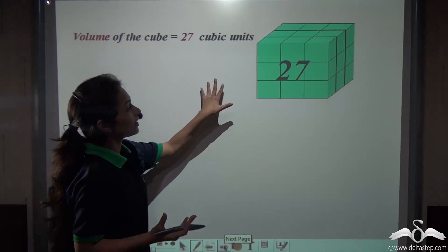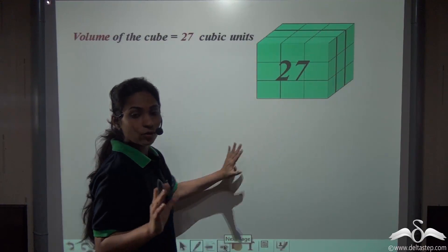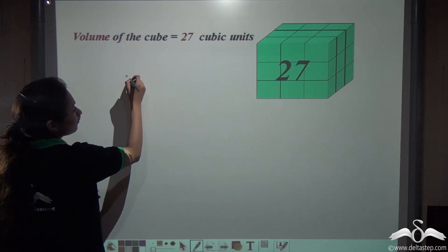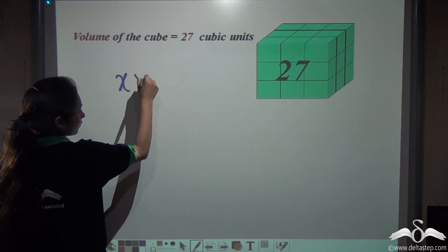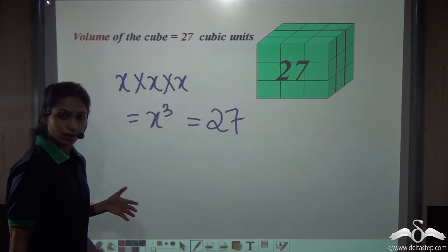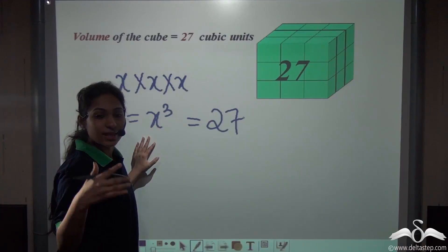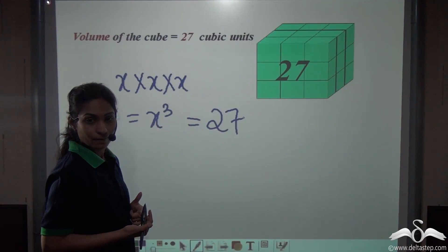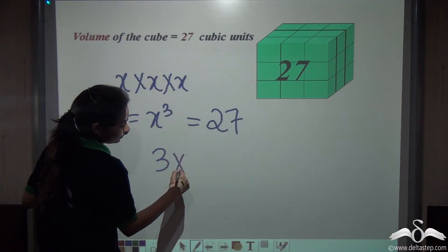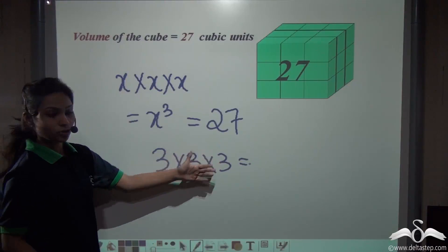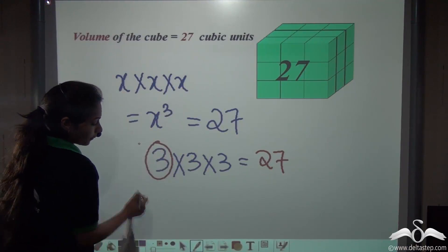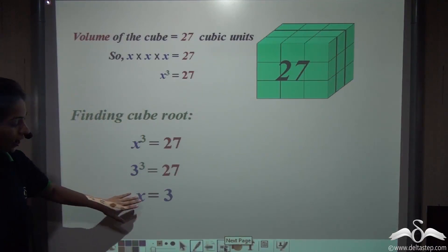Suppose the volume of this cube is 27 cubic units. We know a cube has the same length, breadth and height, so each side measures the same. If we take each side as x, then x into x into x — that is x cubed — equals 27. Now, which number when multiplied with itself 3 times gives 27? With a hit and trial method, we get 3, since 3 into 3 into 3 gives 27. So the value of x is 3.